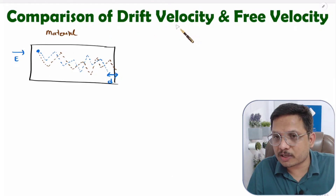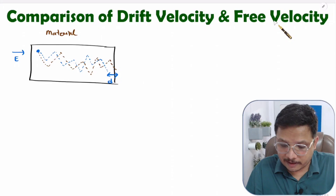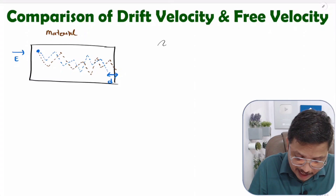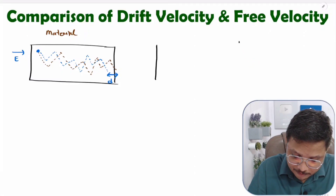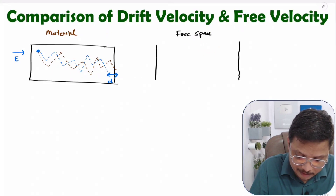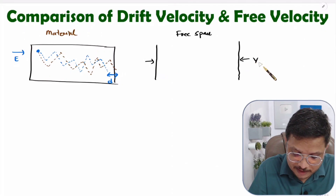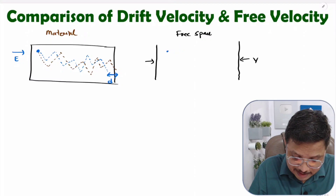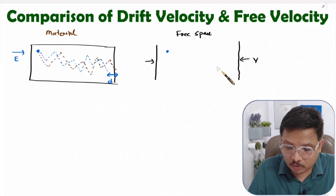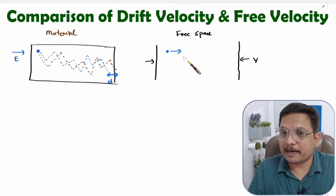When it comes to free space, we calculate free velocity. As a practical example, consider two plates here with free space in between. If you apply a potential difference V and there is a charge carrier here — there are no atoms — then this charge carrier will have a free velocity.